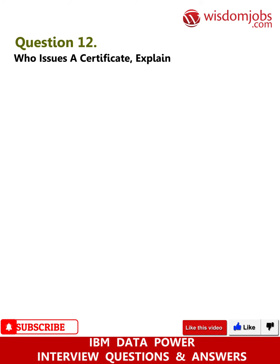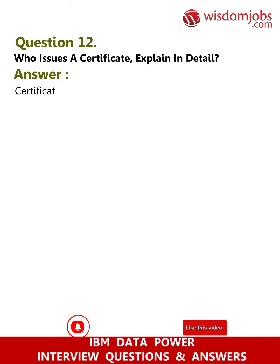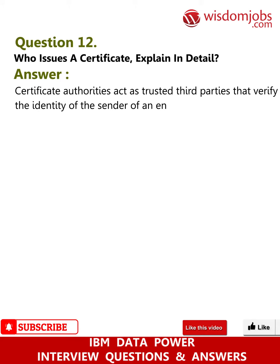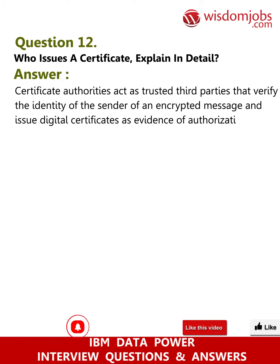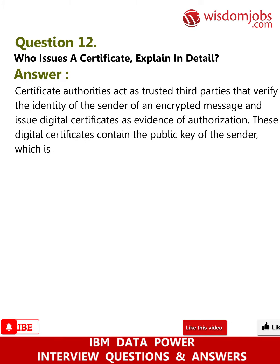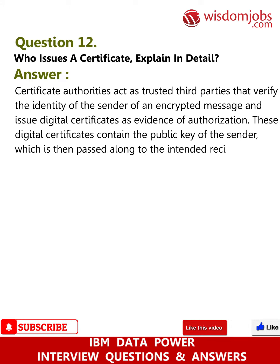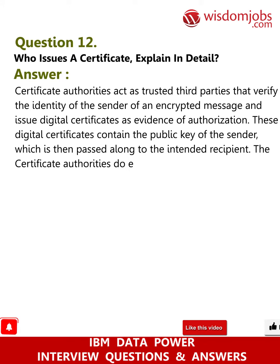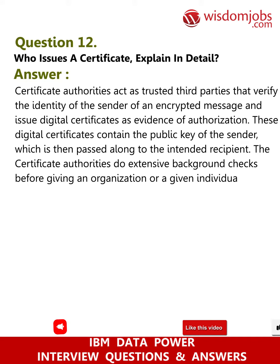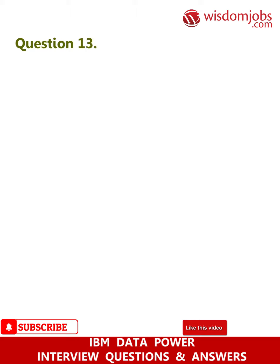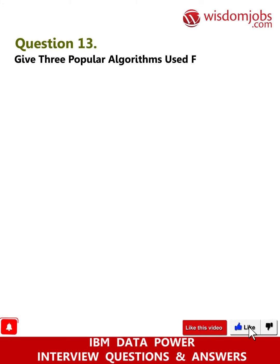Question 12: Who issues a certificate? Explain in detail. Answer: Certificate authorities act as trusted third parties that verify the identity of the sender of an encrypted message and issue digital certificates as evidence of authorization. These digital certificates contain the public key of the sender, which is then passed along to the intended recipient. The certificate authorities do extensive background checks before giving an organization or individual a certificate.